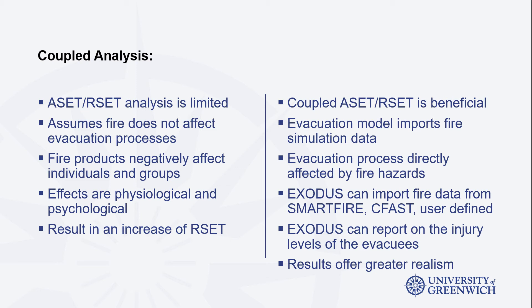Generally, fire products will cause the evacuation process to become less efficient, increasing the RSET component. An approach that would offer greater realism in a fire safety analysis would be one that couples the fire and evacuation models together. The fire calculations are conducted first, but these modeling results are then imported into the evacuation model, which is capable of recreating the simulated fire conditions as the evacuation process is running. In this way, the evacuation model can determine the cumulative effect that all of the various fire products have on the simulated population, the injuries they sustain, and possible fatalities.